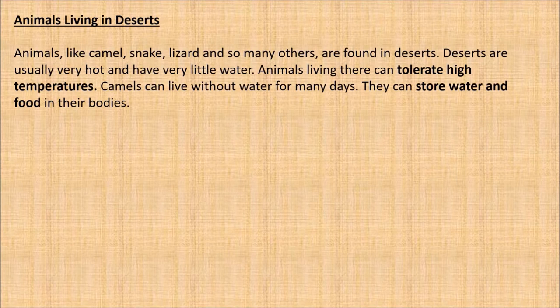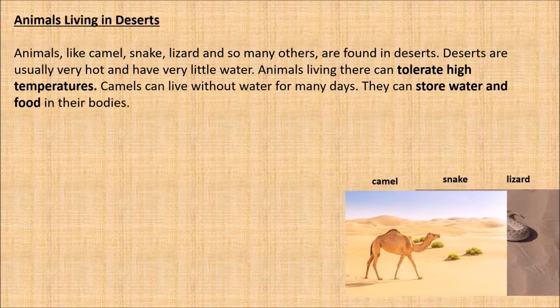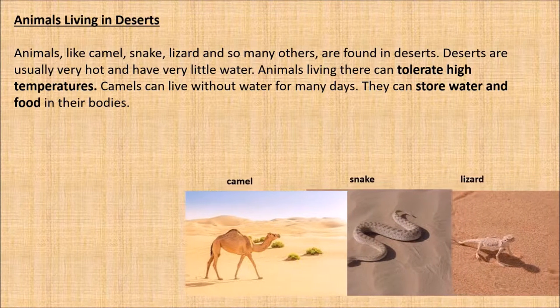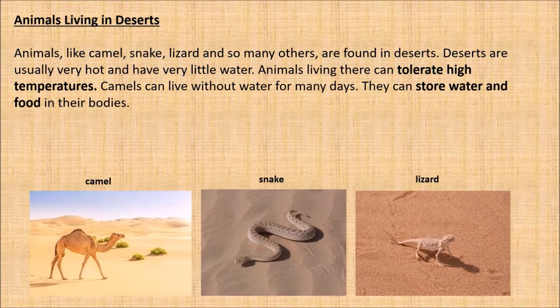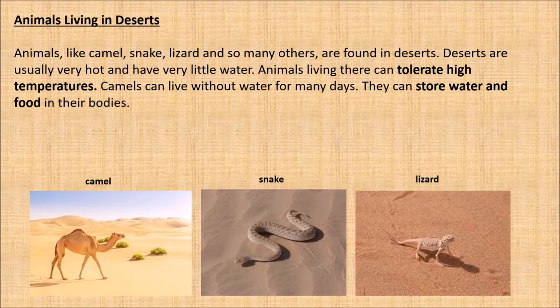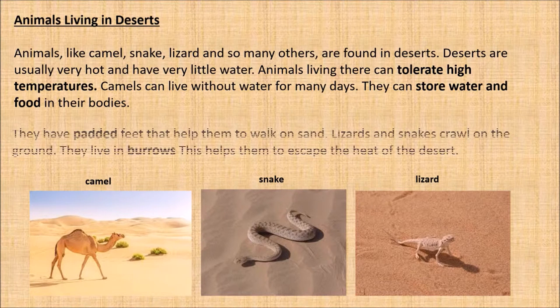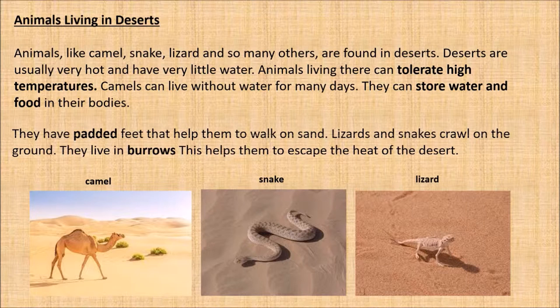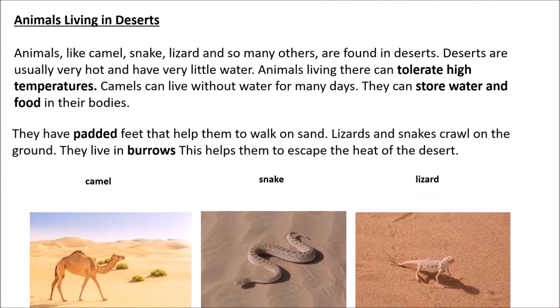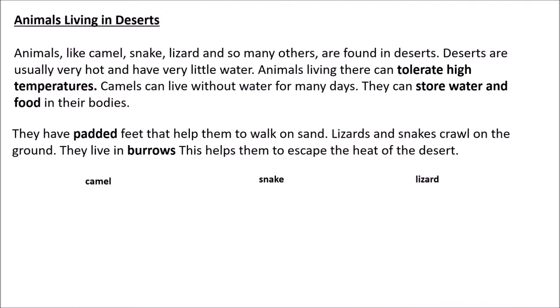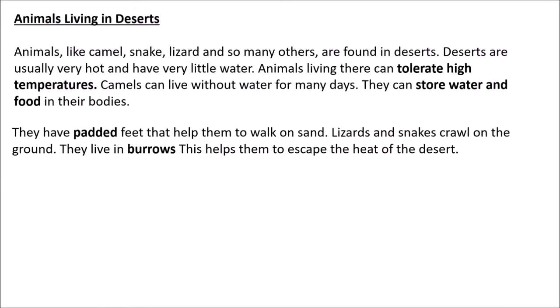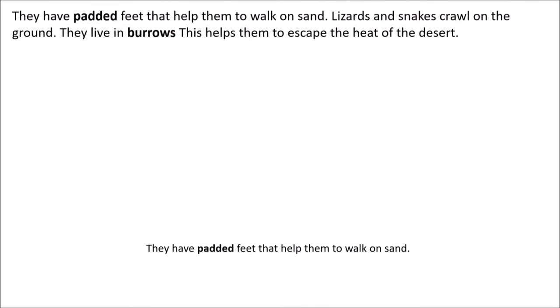Animals living in deserts: animals like camel, snake, lizard, and so many others are found in deserts. Deserts are usually very hot and have very little water. Animals living there can tolerate high temperatures. Camels can live without water for many days — they can store water and food in their bodies. They have padded feet that help them to walk on sand. Lizards and snakes crawl on the ground and live in burrows, which helps them escape the heat of the desert.